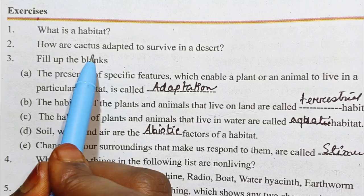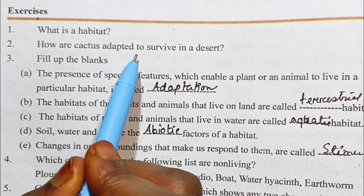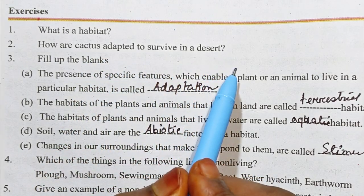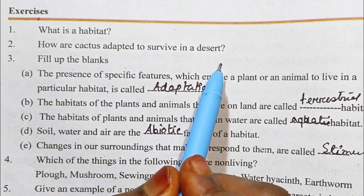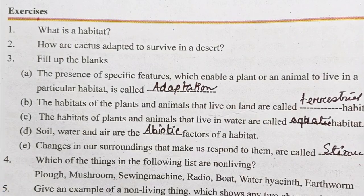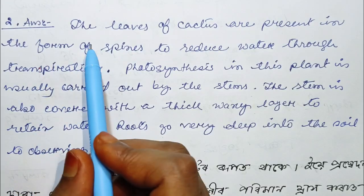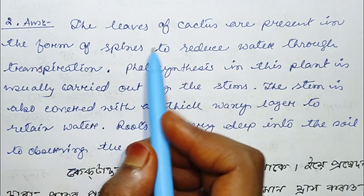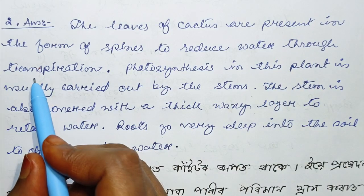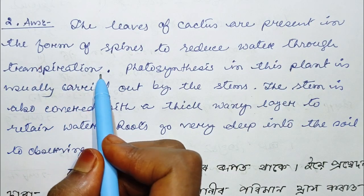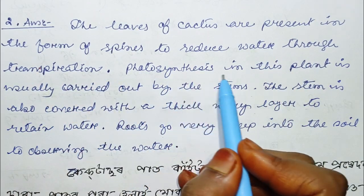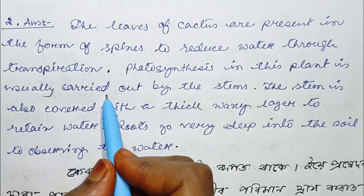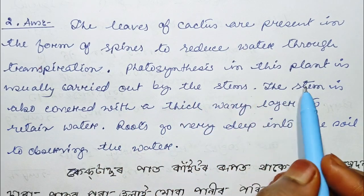Question number 2. How are cacti adapted to survive in a desert? Answer: The leaves of cacti are present in the form of spines to reduce water loss through transpiration. Photosynthesis in this plant is usually carried out by the stems.